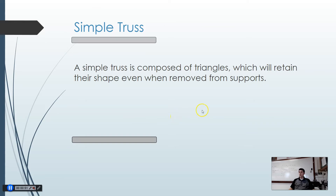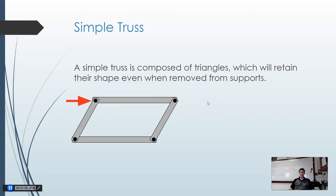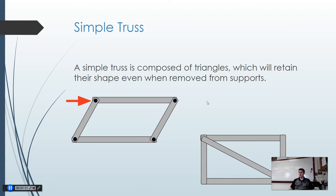A simple truss is composed of triangles which retain their shape even when removed from supports. A rectangular shape with four beams connected by rivets is a bad example — if we apply a force on the side, it would fall. Triangles make things much stronger because there's something there to resist that force.